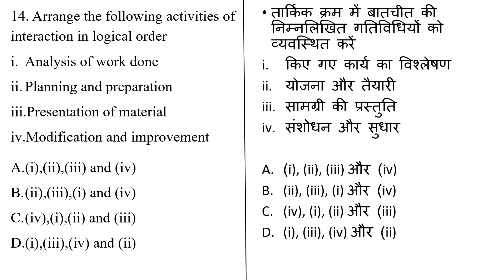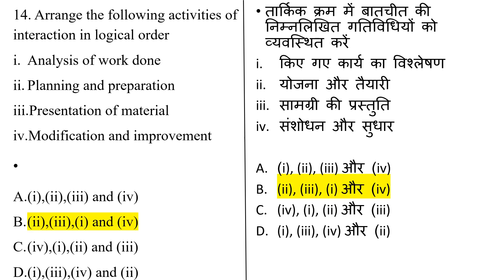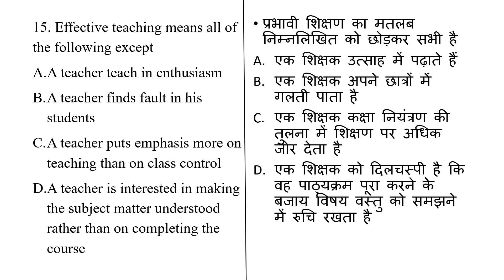Arrange the following activities of interaction in logical order: analysis of work done, planning and preparation, presentation of material, modification and improvement. The correct answer is Option B. In any activity, planning and preparation is the first step, then presentation of material, then analysis of work done, and the last step is modification and improvement.